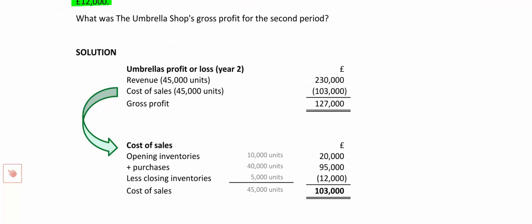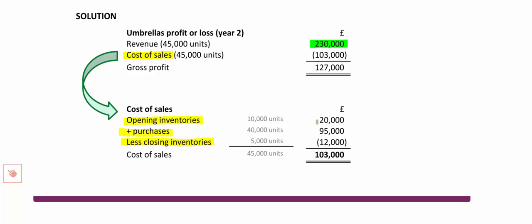The 5,000 umbrellas left at the end of the year had a total cost of £12,000. So how do we work out the profit or loss in year two? I sold 45,000 umbrellas for £230,000. Using opening inventory plus purchases less closing inventory: the 10,000 opening umbrellas cost £20,000, I purchased another 40,000 for £95,000, but haven't sold 5,000 that cost £12,000. Cost of sales is £103,000. In year two, the umbrella company has a gross profit of £127,000.